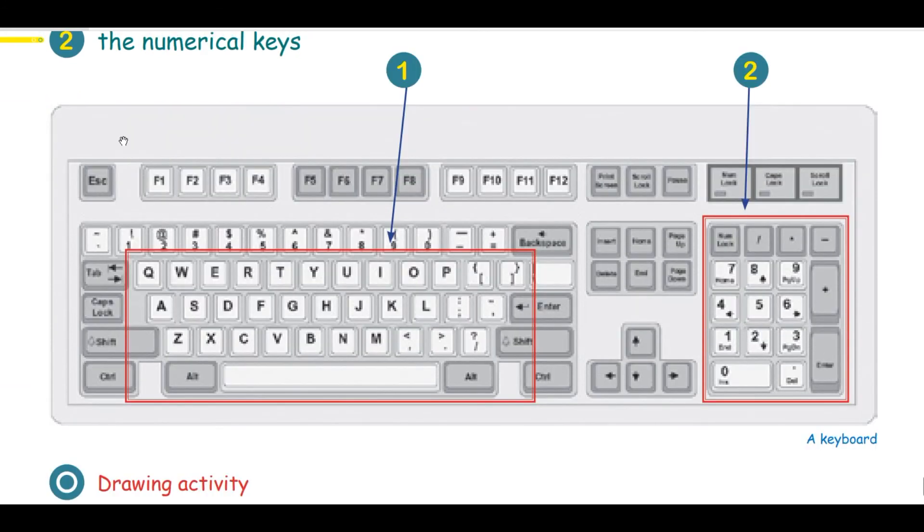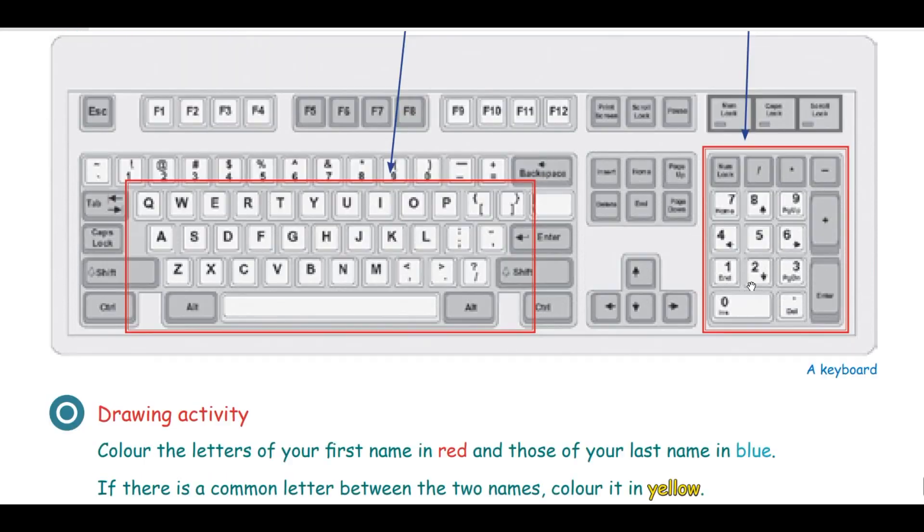On this page, we show them a big keyboard and focus on the two parts: the alphabetical letters and the numerical keys. At the end of this activity, we ask the students to draw their first name in red and their last name in blue. It's a fun activity for students.